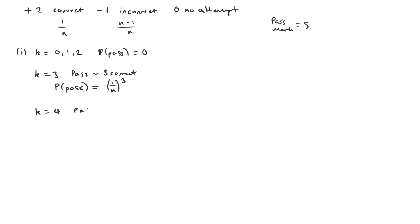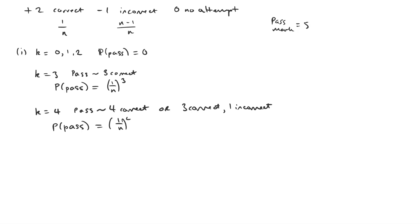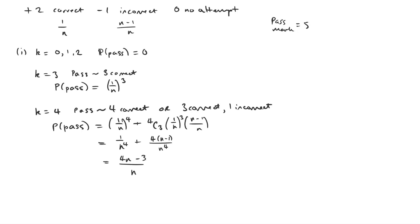If K equals four we could pass by getting all four correct, but we could also score five by getting three correct and one incorrect. So the probability of a pass for this one will be one over N to the power of four for all four correct, and there's four choose three ways of getting three correct out of four, giving probability one over N cubed times N minus one over N. Combining these together we get four N minus three divided by N to the four.